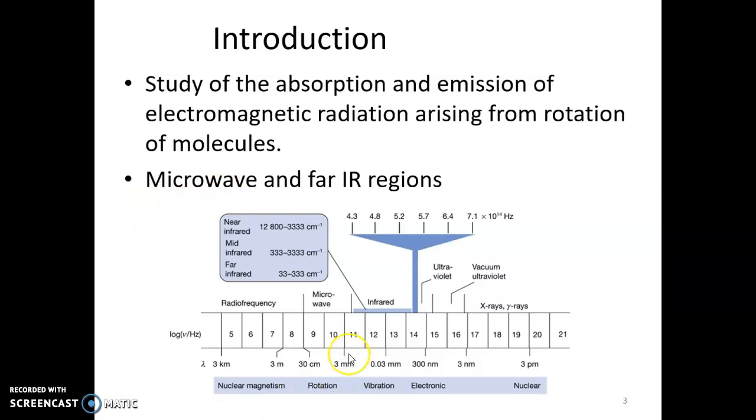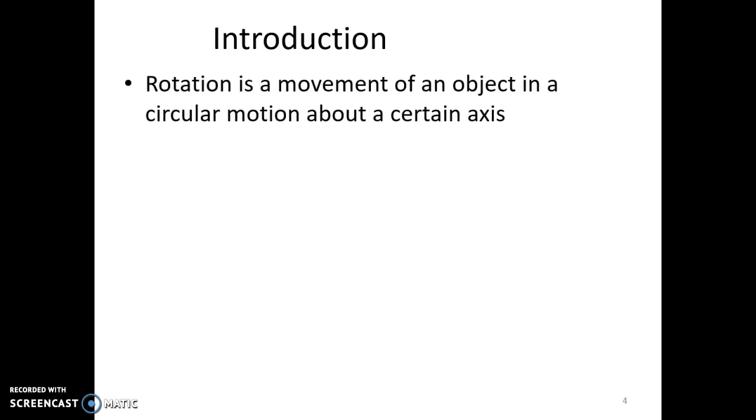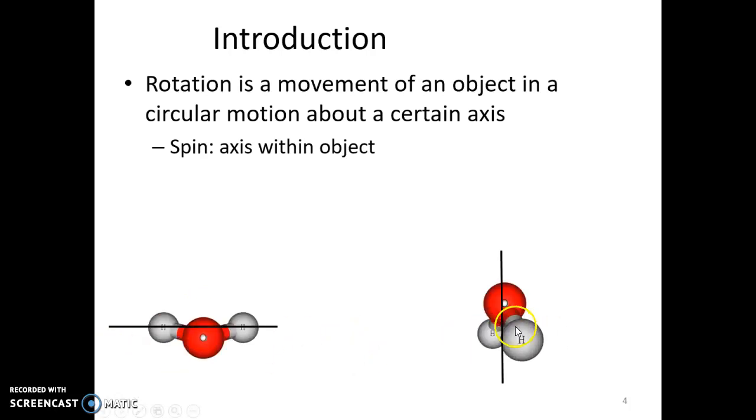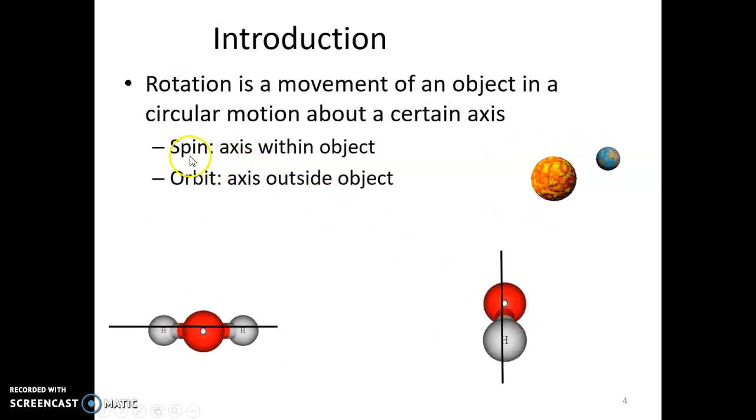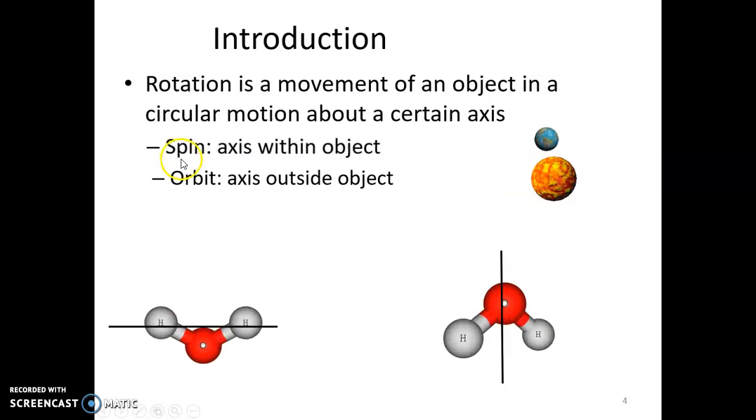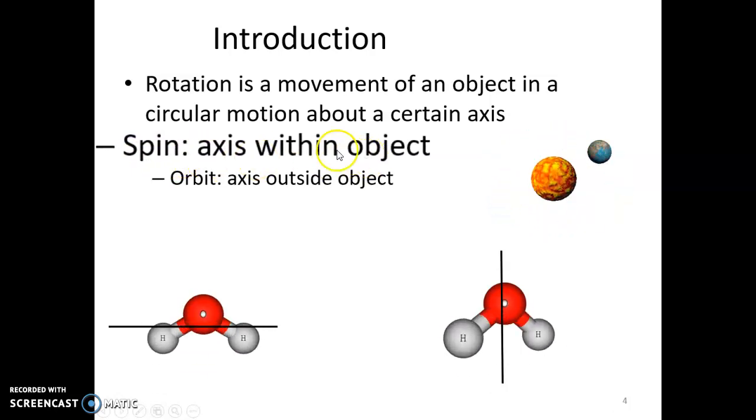The rotation of a molecule is a circular motion about a certain axis in the molecule. The axis can be within the molecule, and then we say it's a spinning motion. The axis can be outside the object; the object is orbiting about a certain axis outside its center of gravity. Water molecules are rotating about an axis that coincides with the center of gravity. Microwave spectroscopy studies the spinning motion that is related to the molecular structure of the molecule.